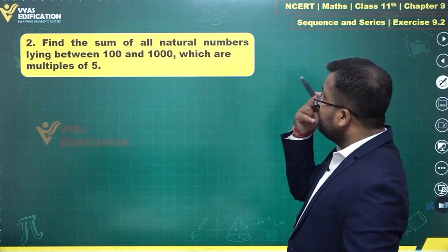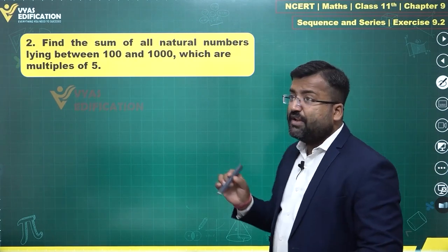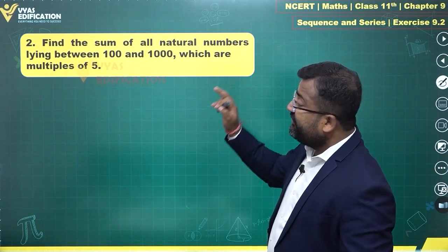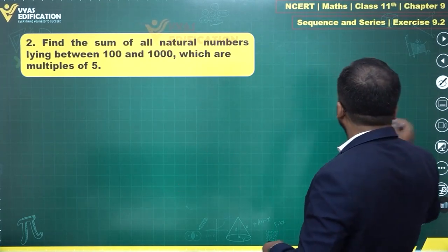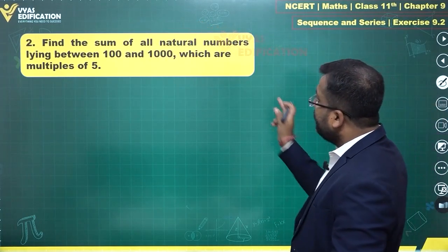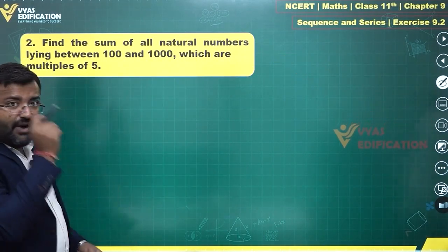In the second question we are given: find the sum of all natural numbers lying between 100 and 1000 which are multiples of 5. Now the person has clearly mentioned lying between, so since they mentioned lying between we are not supposed to consider 100 and 1000 because both of them are also multiples of 5.